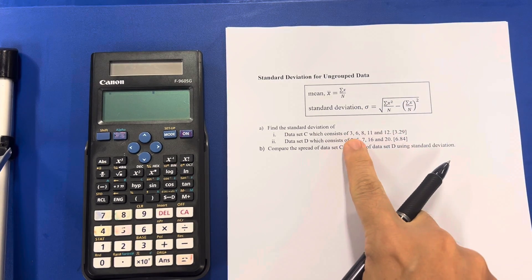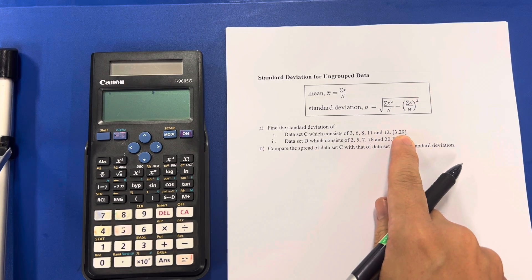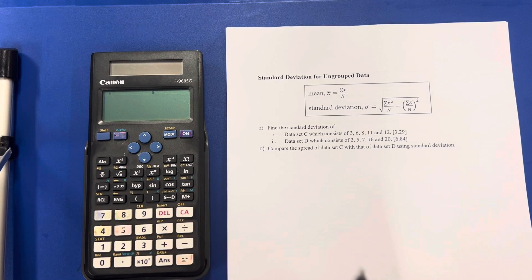So given this data, 3, 6, 8, 11, 12, how do we get this standard deviation using the calculator?